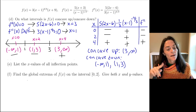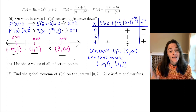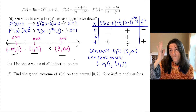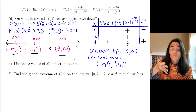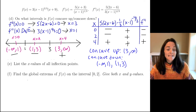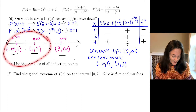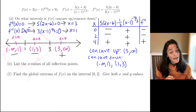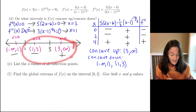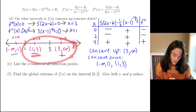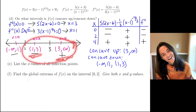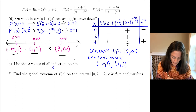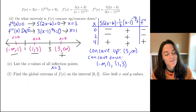Now we need x values of inflection points. Inflection points are points on the graph where the concavity switches. You notice the concavity is not switching at x equals 1, so x equals 1 is not an inflection point. But at 3, the concavity is switching — we switch from concave down on one side to concave up on the other. So I have one answer here: x equals 3 is my only inflection point.